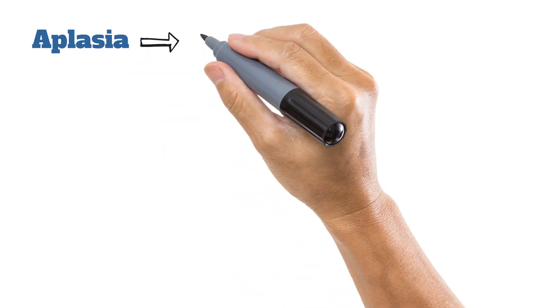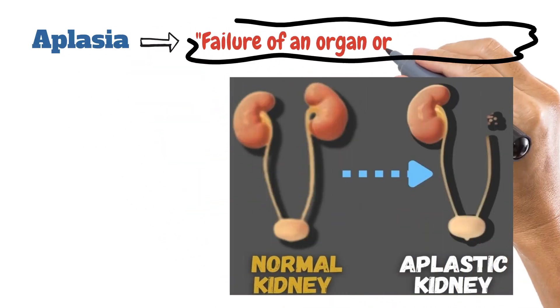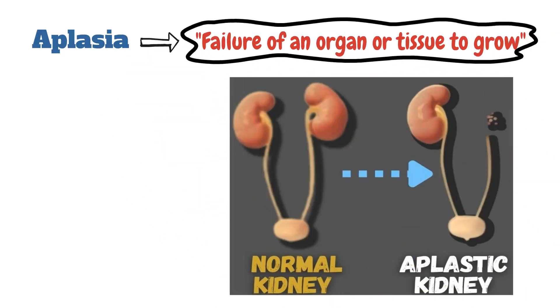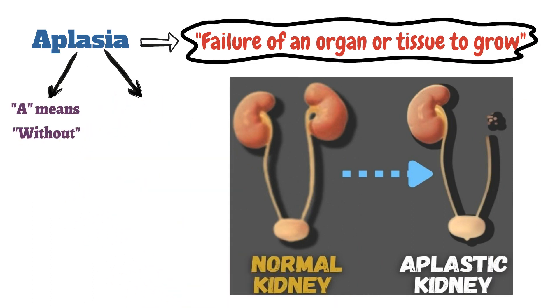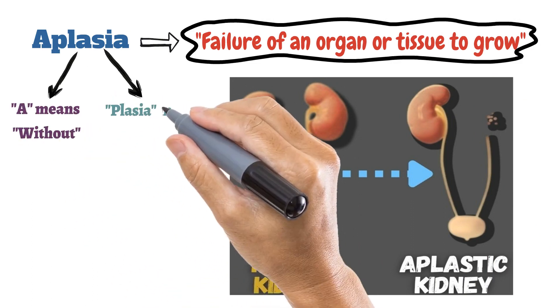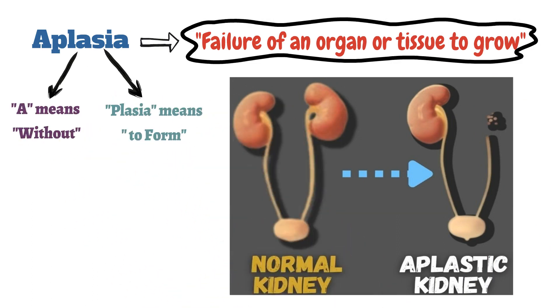Aplasia means failure of an organ or tissue to develop. This word comes from two roots: 'A' means without and 'Plasia' means to form.